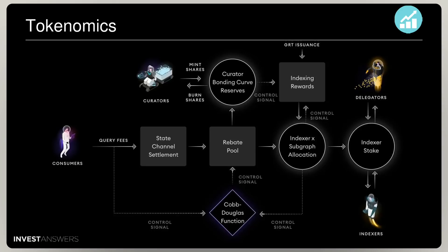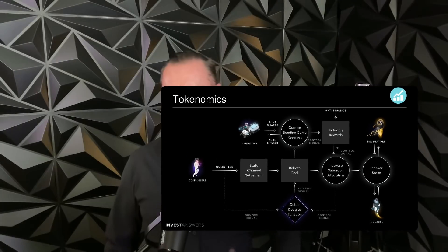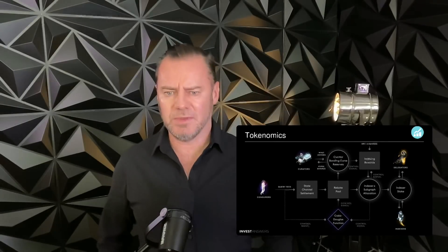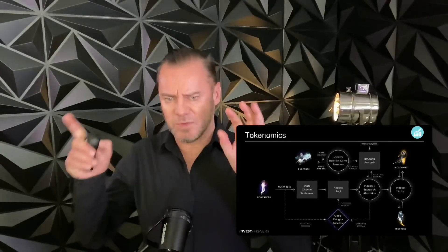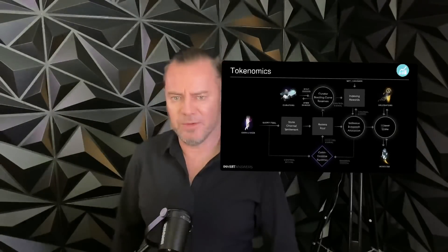There is also a rebate pool that rewards all network participants based on contribution to the graph network. The rebate pool is designed to encourage indexers to allocate a stake in rough proportion to the amount of query fees they earn for the network. They use a Cobb-Douglas production function to allocate the rewards in the rewards pool — this has been really well thought out.